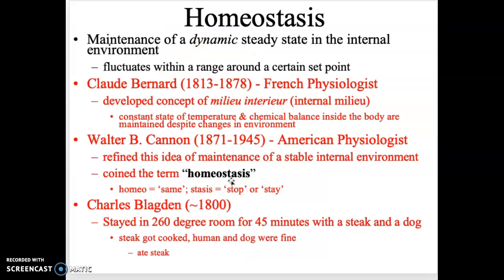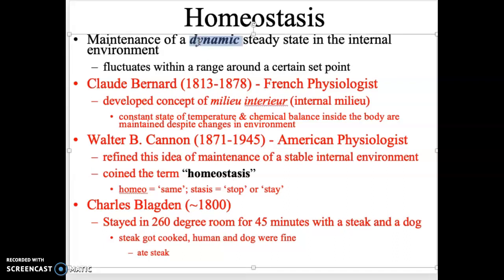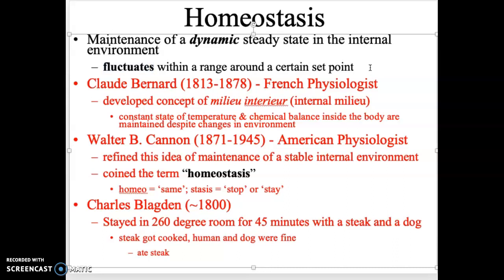Now we'll talk about the concept of homeostasis — the maintenance of a dynamic steady state. Dynamic means it's fluctuating: the body has a certain goal, a set point, but it's not always exactly at that spot. It can go above or below that set point and still be within a normal range. For example, body temperature is not always exactly the same — you might fluctuate plus or minus one degree on any given day, and that's totally normal.